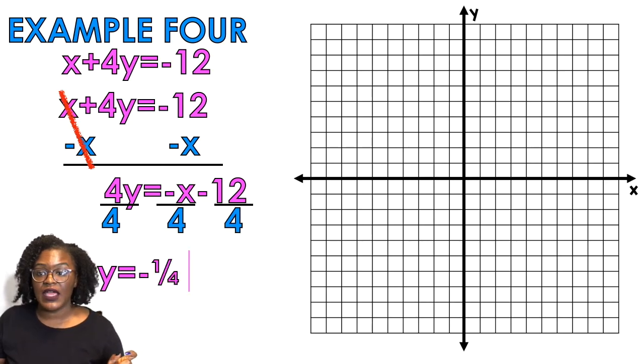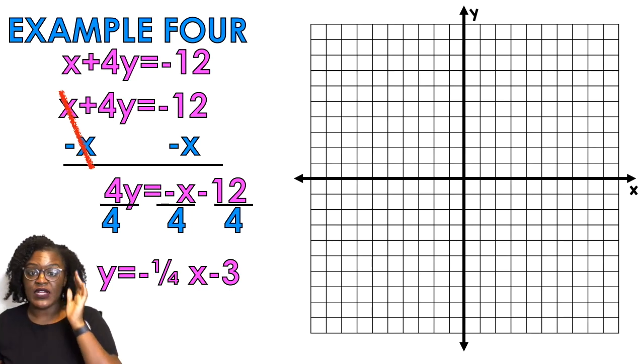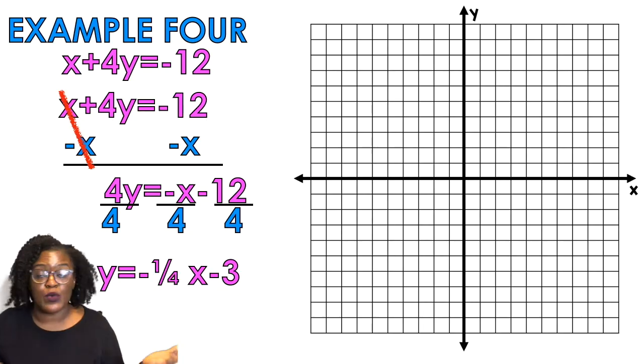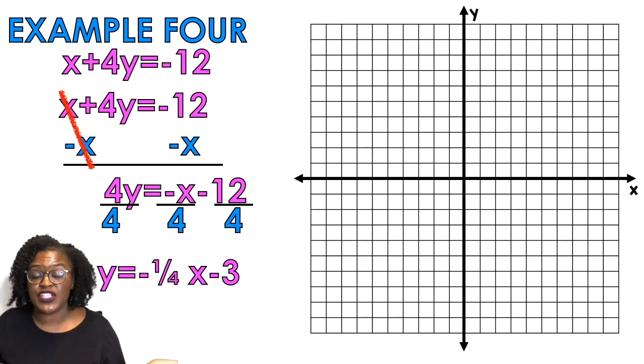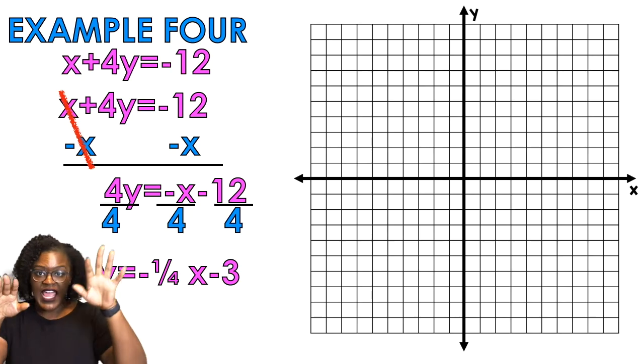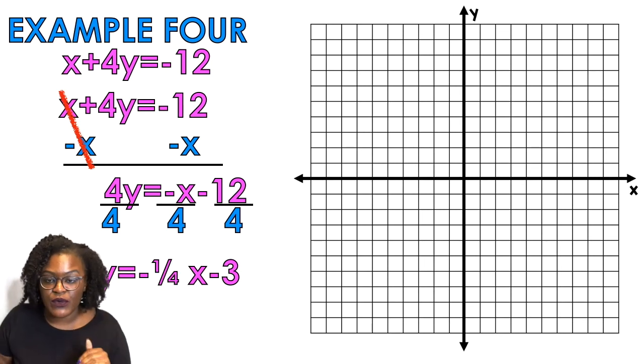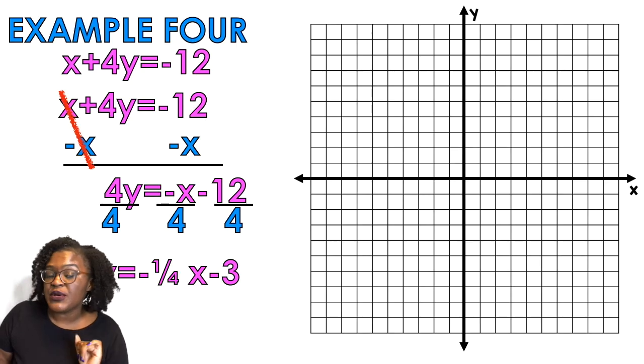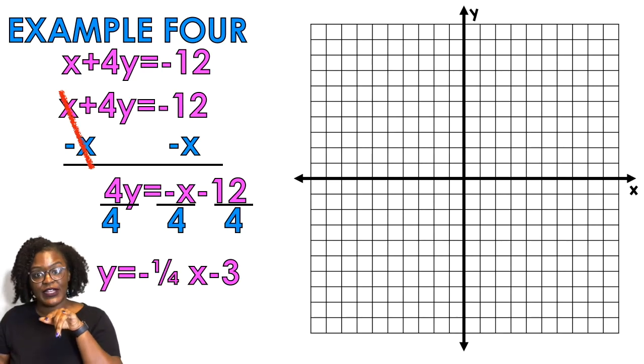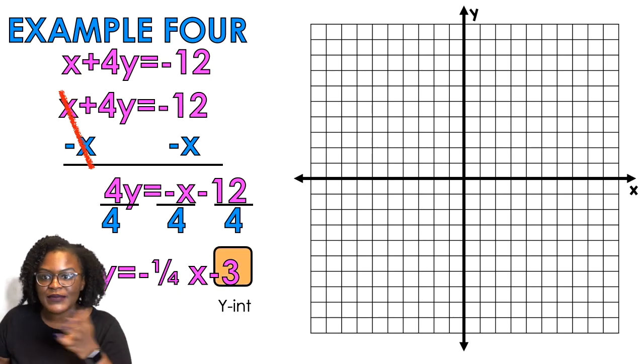So when I do that I'm gonna get y = -1/4 x - 3. Why one fourth? Because there's an imaginary one in front of the x, so when I divide one by four it's one fourth. We just leave it as a fraction because remember we like our slope as a fraction because it gives us a rise and it gives us a run. So rise is negative one, run is four. But first we have to identify our y-intercept. Which number is our y-intercept? Did you say three? How did you know? I'm just impressed.